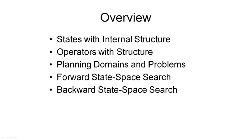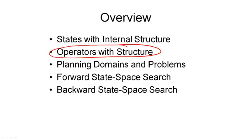We have seen what the STRIPS representation for world states looks like. The internal structure is represented as a set of ground atoms, where each atom expresses a relation that must hold between objects in the domain. The next step is to look at operators with internal structure and actions that are instances of these operators.